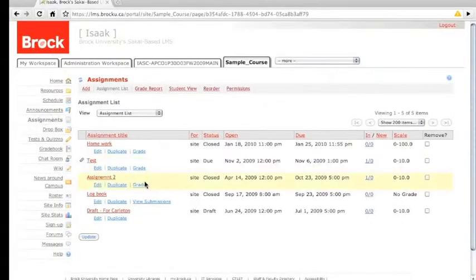Let me go into another course and show you an example of some student work submitted already. So I'll go into my sample course here, and it's assignments. And this is the assignment list view of the assignments tool. And on assignment two, we have one submission here, so I'm going to click on grade.